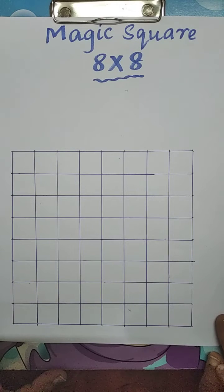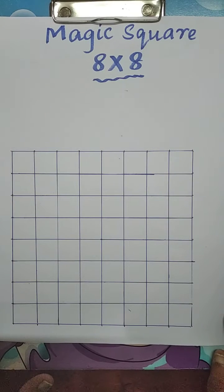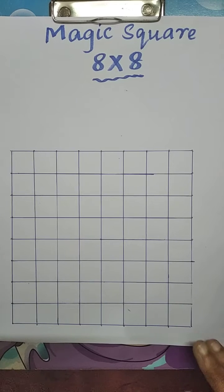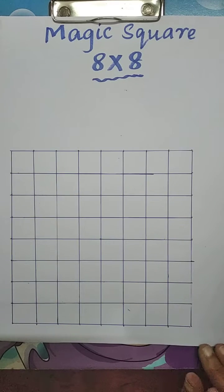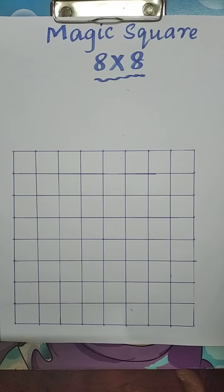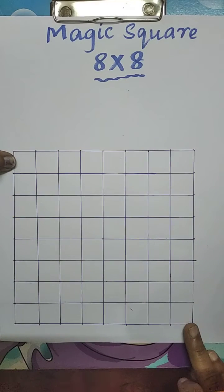We can use consecutive numbers. They are natural numbers, even numbers, odd numbers, or multiples of any numbers. Now here I will take natural numbers 1 to 64.